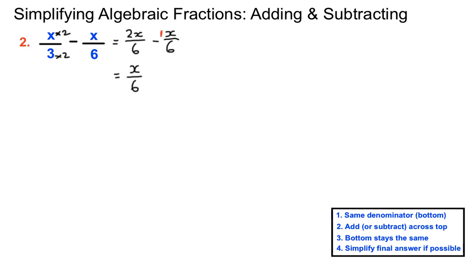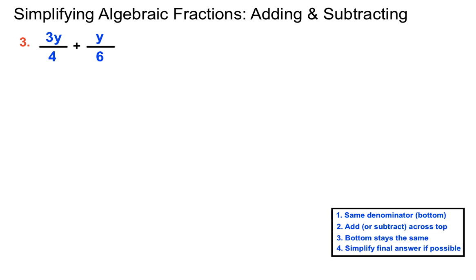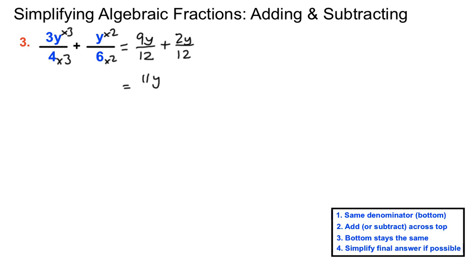Step one is to turn them so they've got the same bottom, then subtract across the top and keep the bottoms the same. In example 3 we look for the lowest common multiple of 4 and 6, which is 12 — not 24. Using the lowest common multiple makes the simplifying easier at the end. Turning both into twelfths: multiply the left fraction's bottom by 3, so 3 times 3y gives 9y on top. Multiply the right fraction's bottom 6 by 2, giving 2y on top. Adding: 9y plus 2y is 11y over 12, which doesn't simplify further.